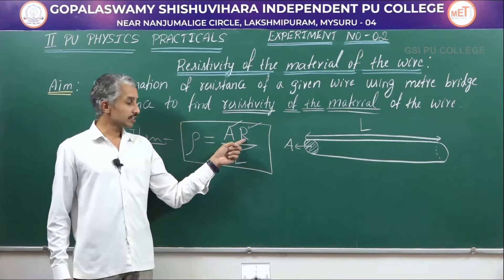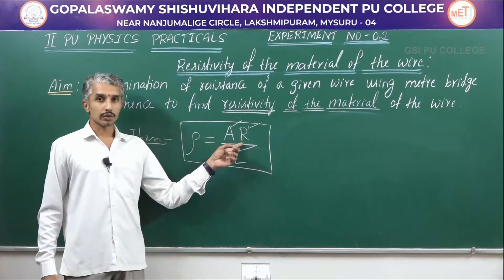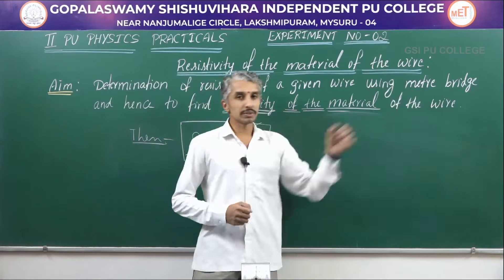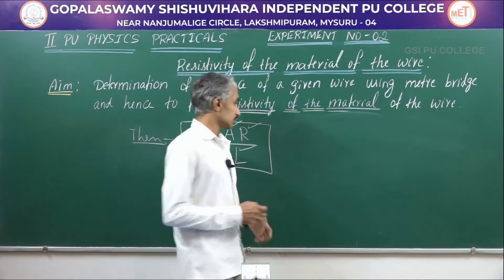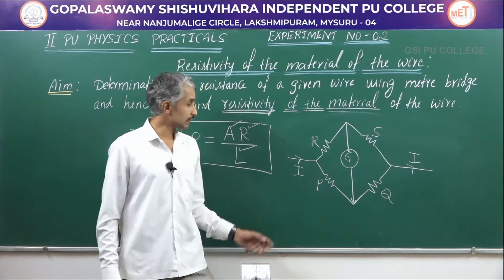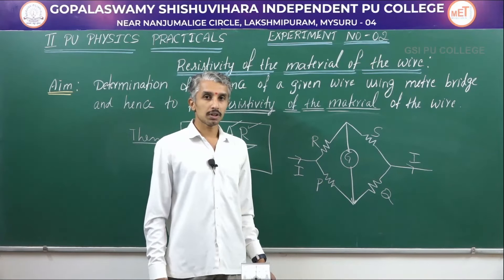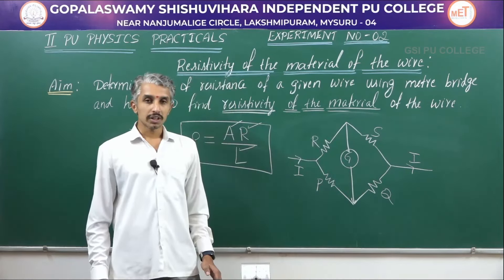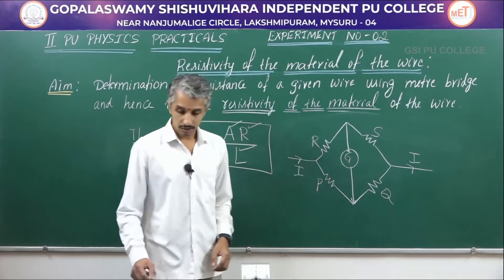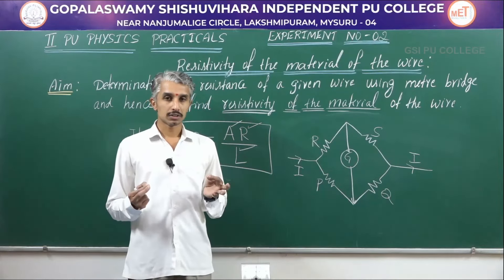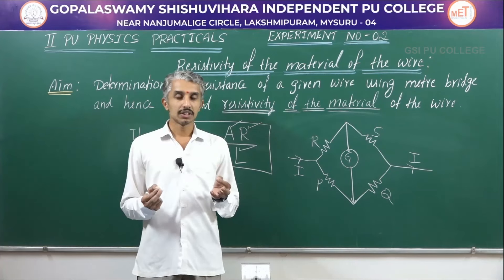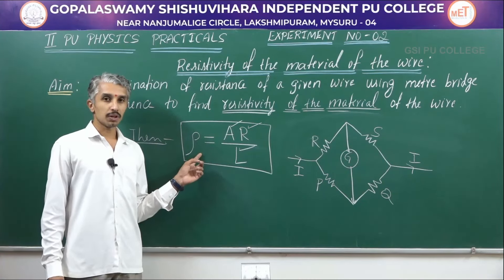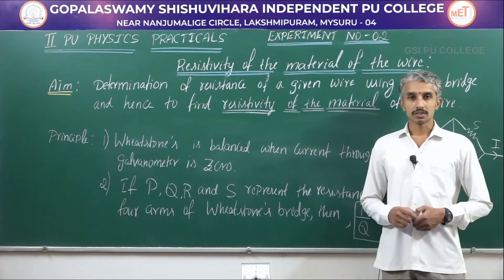Finally, I am left with finding the resistance of the wire. The resistance is found using a meter bridge. A meter bridge works on the principle of the Wheatstone network. In session 12 of chapter 3, current electricity, we studied the meter bridge and its balancing condition. The main experiment today is to find the resistance of the given wire using a meter bridge, and then calculate the resistivity.